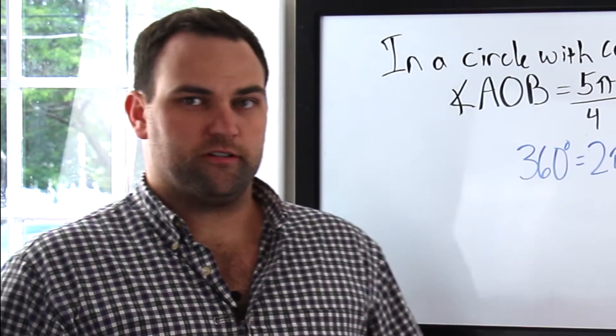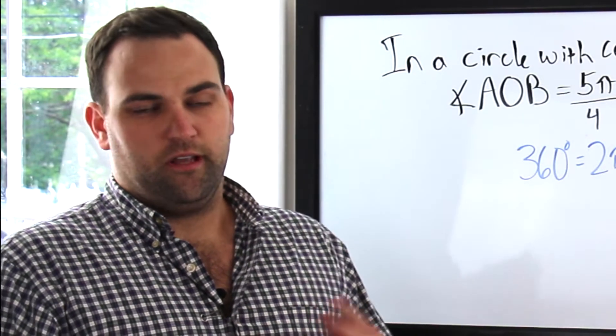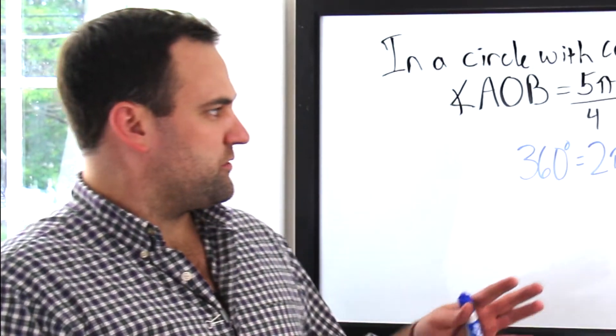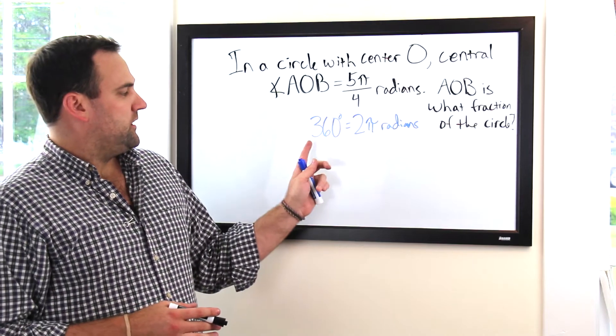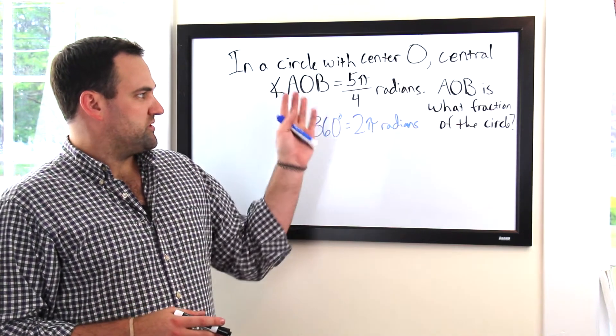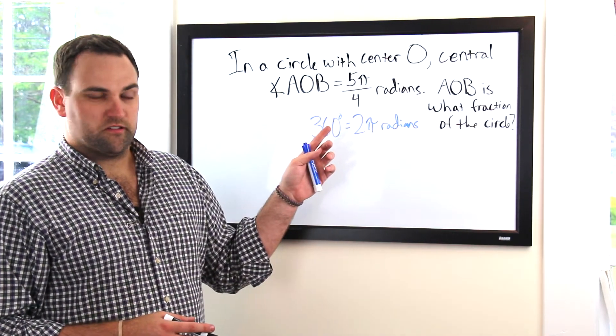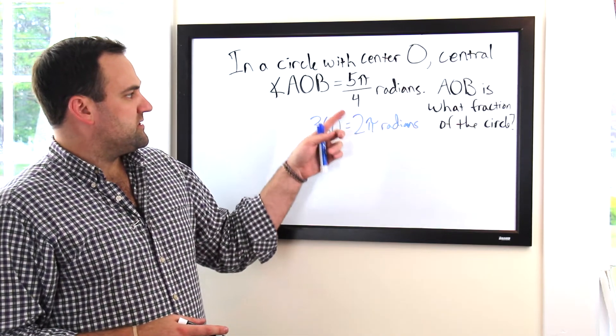Alright, so we could draw out a circle for this, but I'm going to show you that we don't even need to. If it helps you, go for it. But let's just go through it this way. So if 360 degrees, which is the measure of angles in a circle, is 2π radians, let's convert that and get a common denominator here.